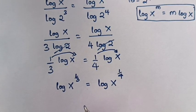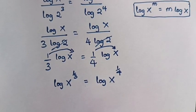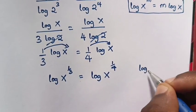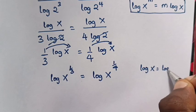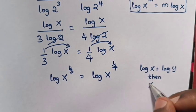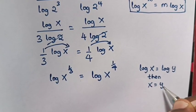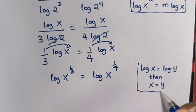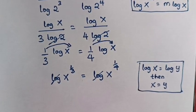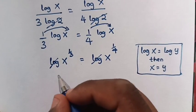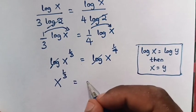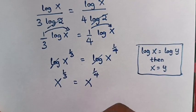From this equation we will apply the logarithmic rule that if log x is equals to log y, then x is equals to y. So log and log cancel. In our equation this log and this log will cancel.